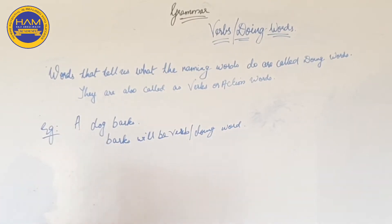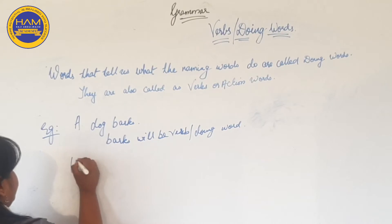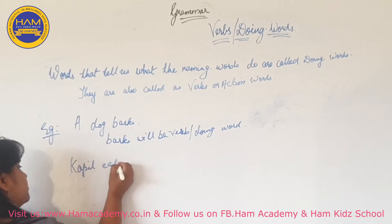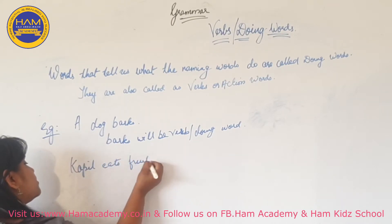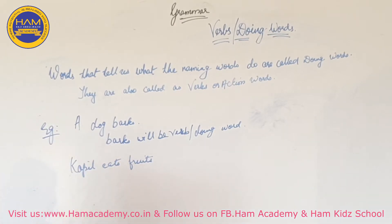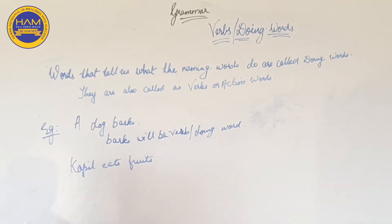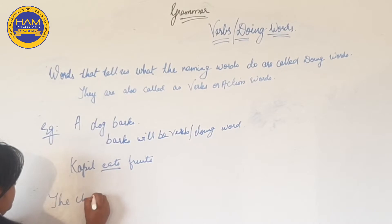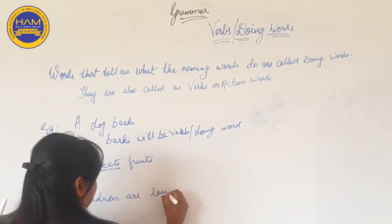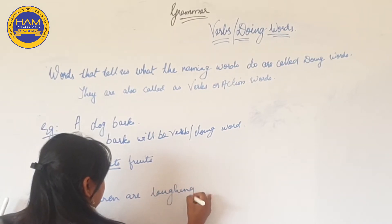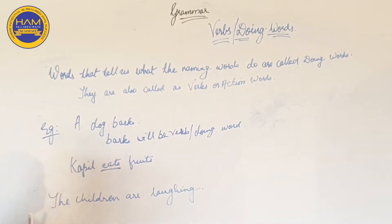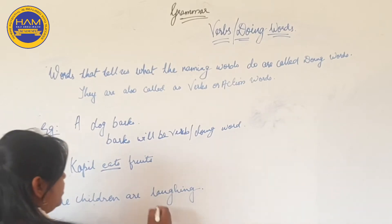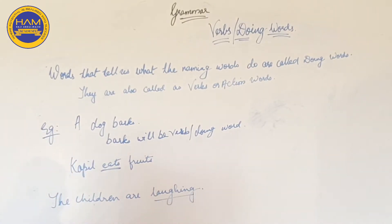Couple eats fruits. What does the couple do? The couple eats fruits. So here 'eats' will be the verb. The children are laughing. What are the children doing? The children are laughing. So 'laughing' will be the verb.